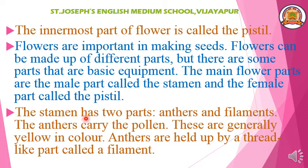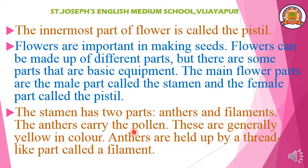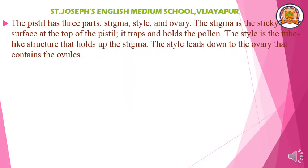The stamen has two parts: anther and filament. The anther carries the pollen grain, which is generally yellow in color. Anthers are held up by the thread-like part called filament. Filament is a tube-like structure which carries the anther. Anther is a yellow colored powdery substance which carries pollen grains. This is called the male reproductive part of a flower.